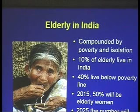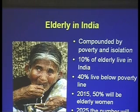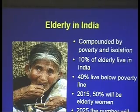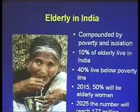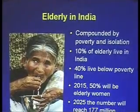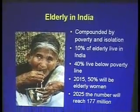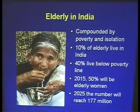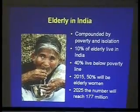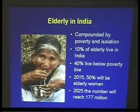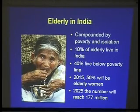We talked a little about children and young adults, but what about the elderly? If you look at the United States with the baby boomers, we're going to be faced with a very similar situation as is India. Forty percent of the elderly in India live below the poverty line. By 2015, 50% will be elderly women. Women have high rates of depression — the ratio is 2 to 3 to 1 compared to men.